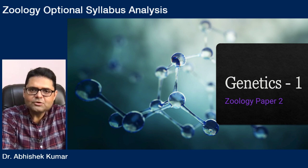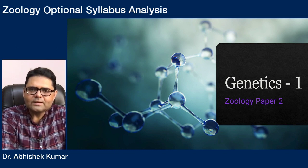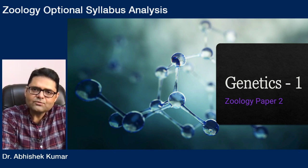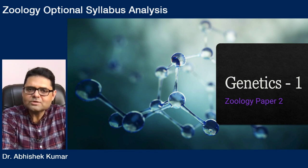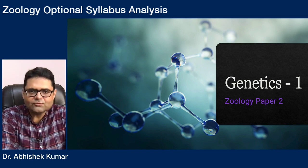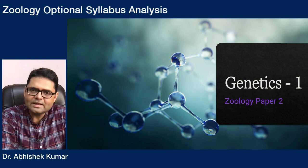The way UPSC has mentioned the genetic syllabus, it has actually mixed both transmission genetics and molecular genetics in a way that is not very conducive to building good concepts. First and foremost, we need to segregate the topics into different parts so that when we study genetics we build coherent concepts. With coherent concepts we will always find it easier to write answers which fetch marks. So let us start our journey of genetics with syllabus reorganization and then deconstructing the molecular genetics topics.